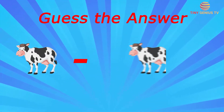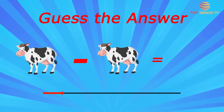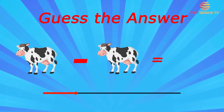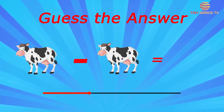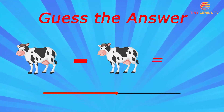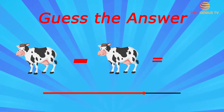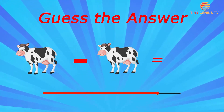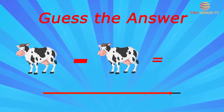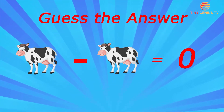There was a cow in the field and it ran away when I got there. Now how many cows are there in the field? There is zero cow.